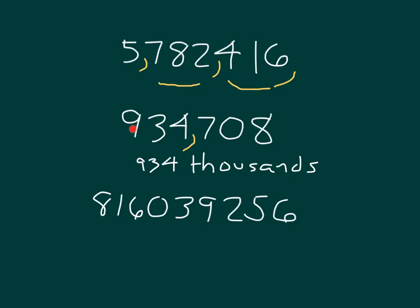Were you able to read that number? And where would you place the commas within the last one? You try. Did you place them like that? This number would be eight hundred sixteen million thirty-nine thousand two hundred fifty-six, where there are eight hundred sixteen millions in that number.